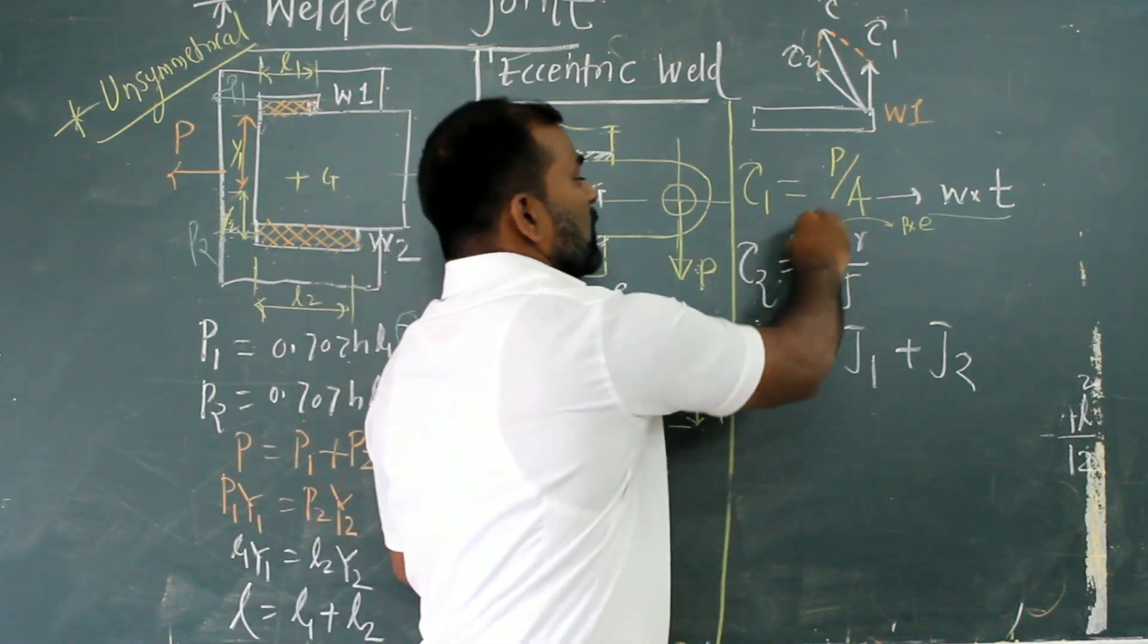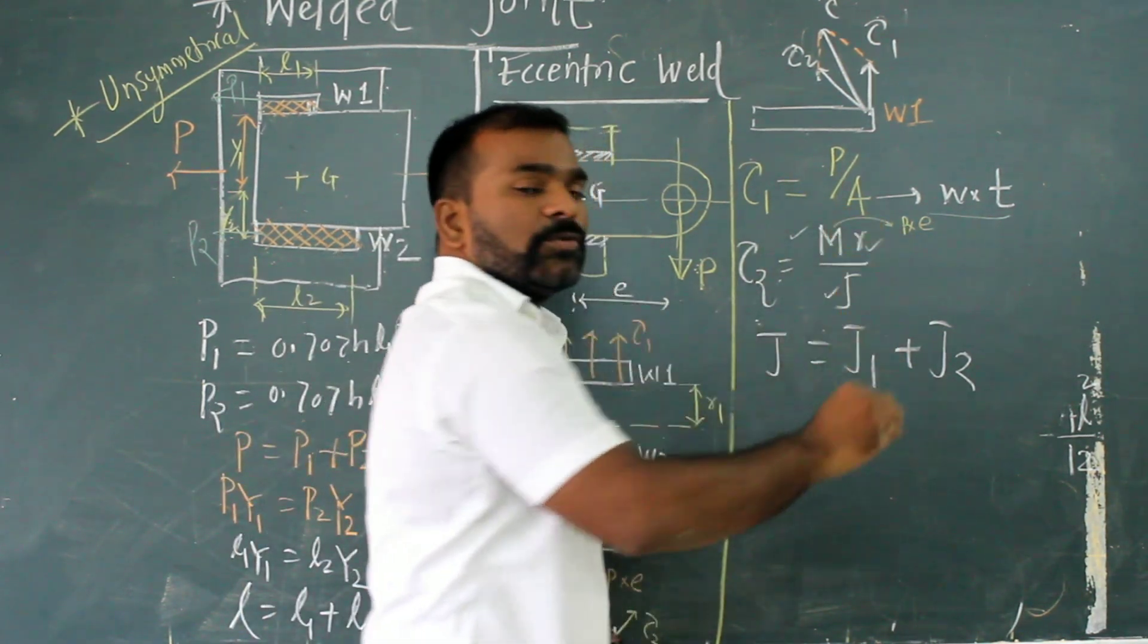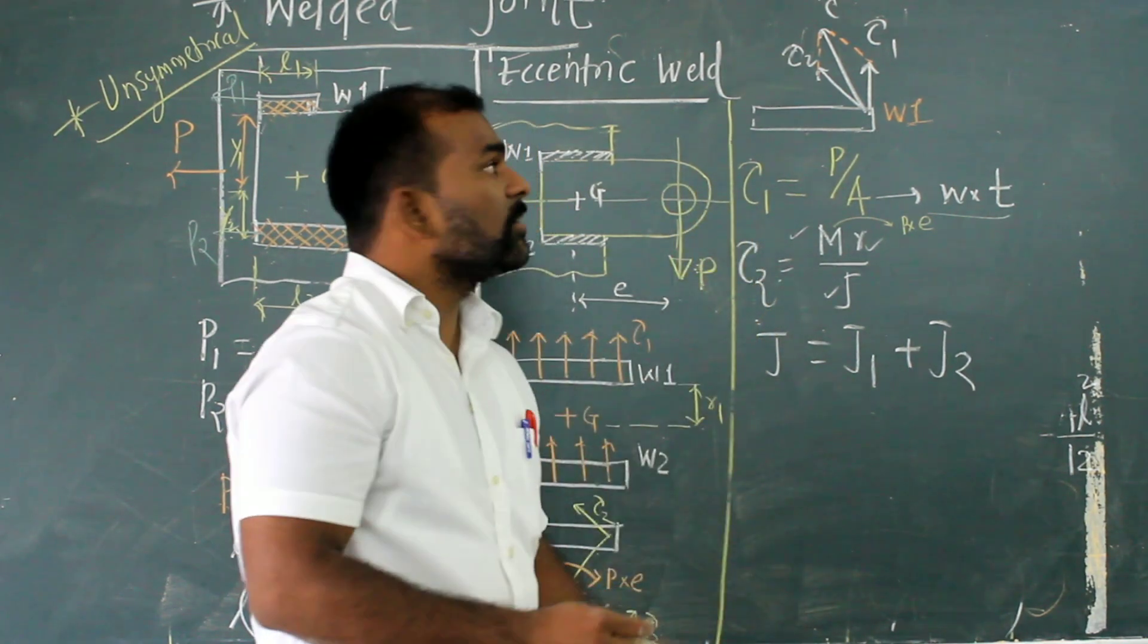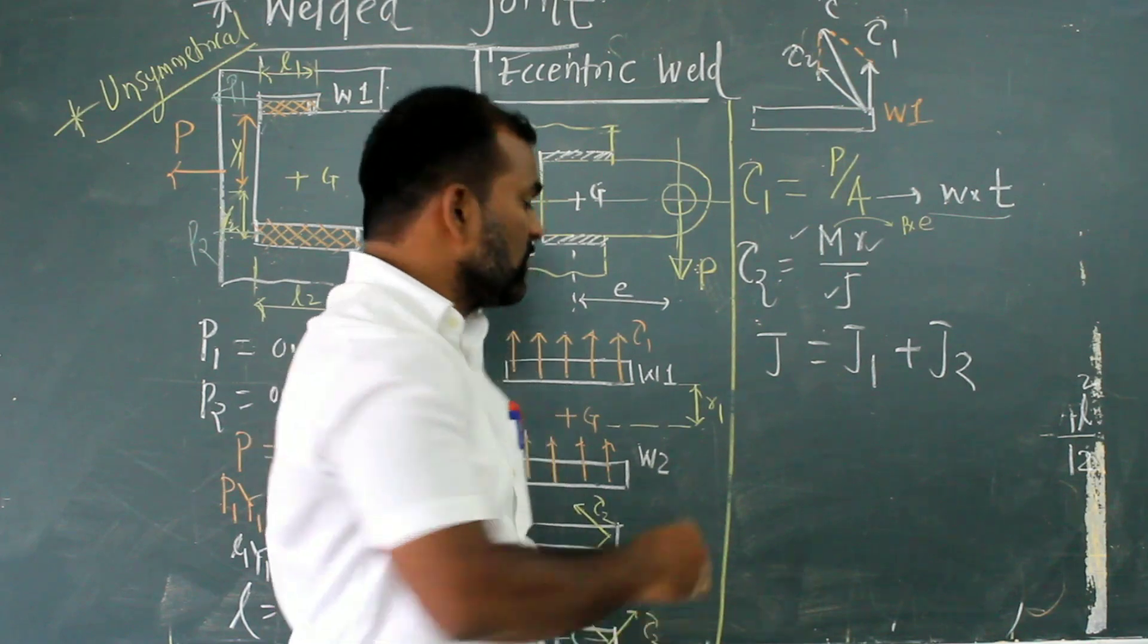So this value we know, this we know, and this we know. So it means primary shear stress also we get, secondary also we get. Now remaining is resultant.